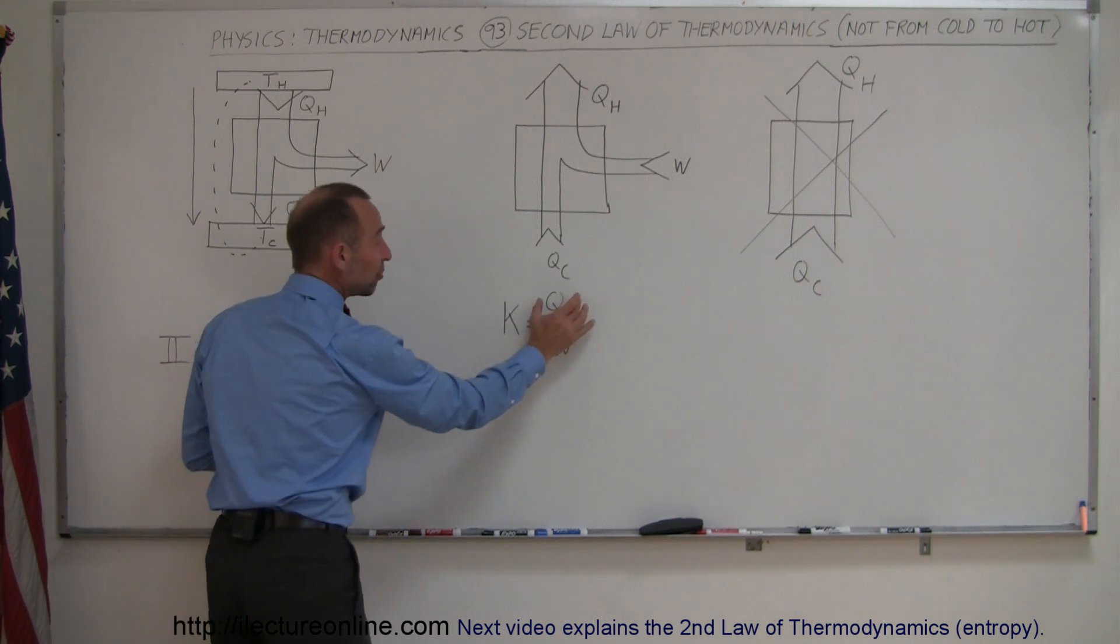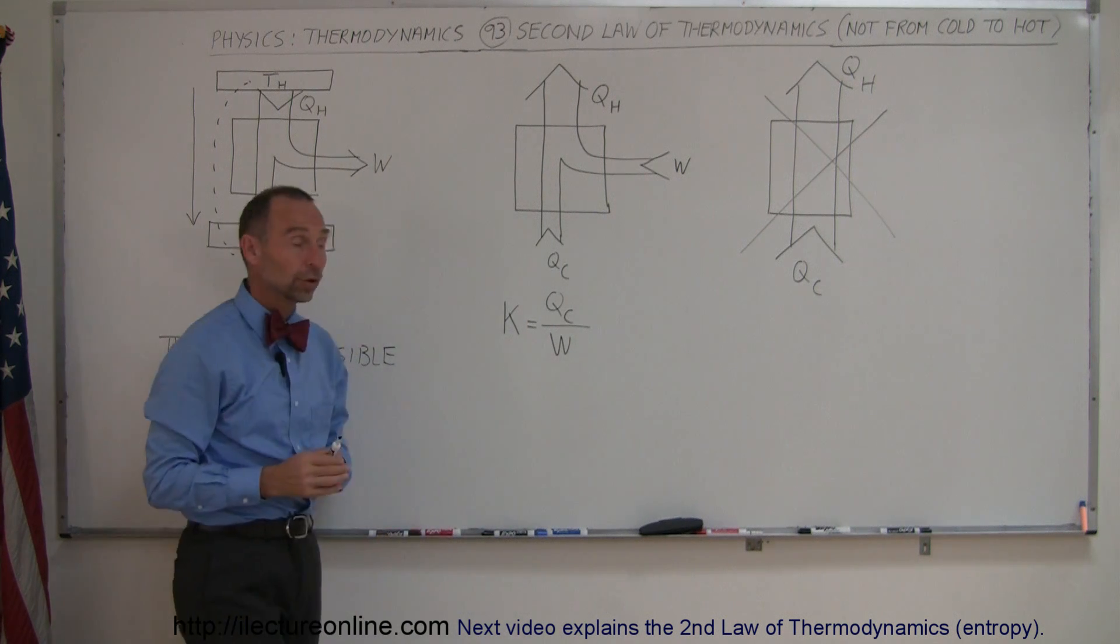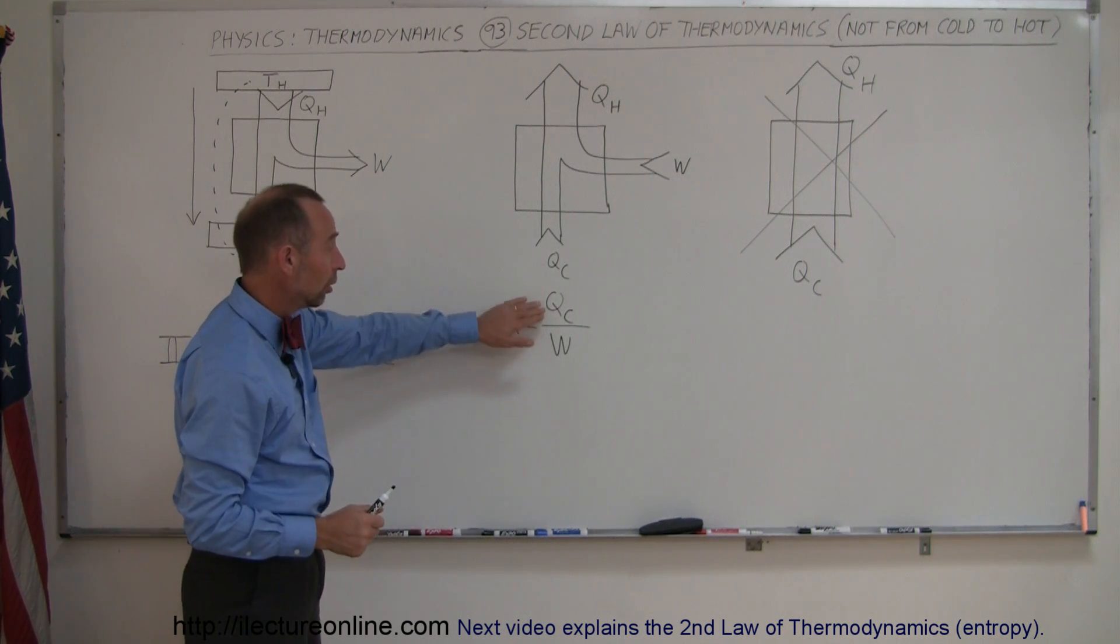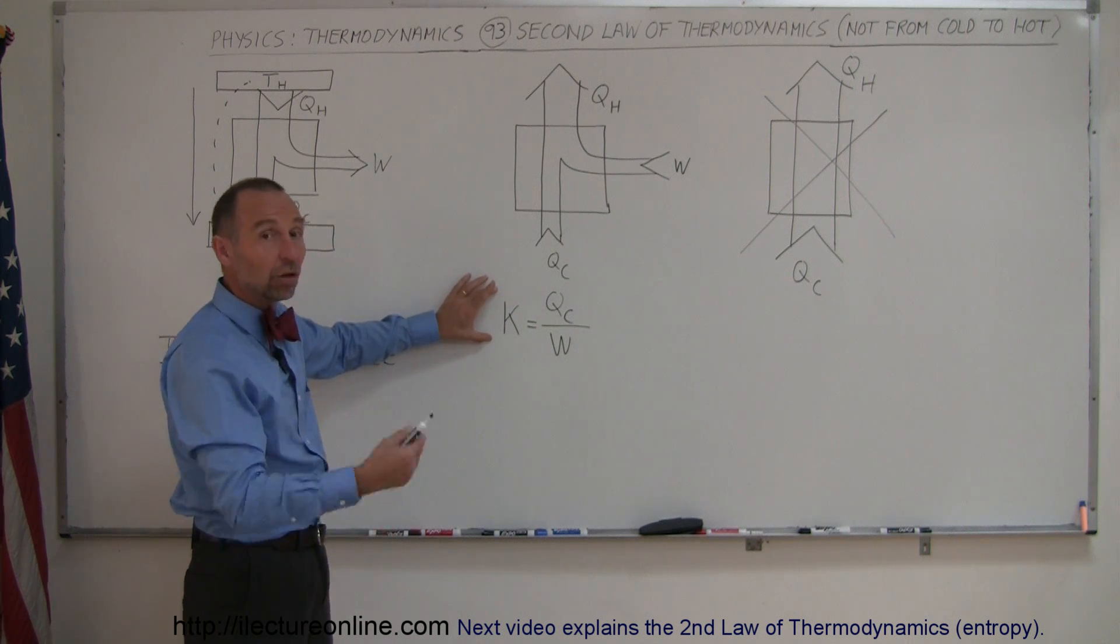And of course, you want to maximize the heat being taken out of the refrigerator and minimize the amount of work you want to do. So you want W to be small, Q sub C to be large, and you want the ratio to be as large as possible.